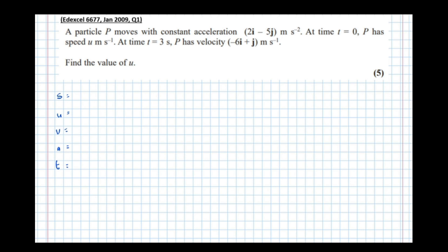Initial velocity is what we're trying to find, so let's call that (u₁, u₂). The final velocity is (-6, 1). I'm writing these as column vectors—it's much easier to do the calculations this way.